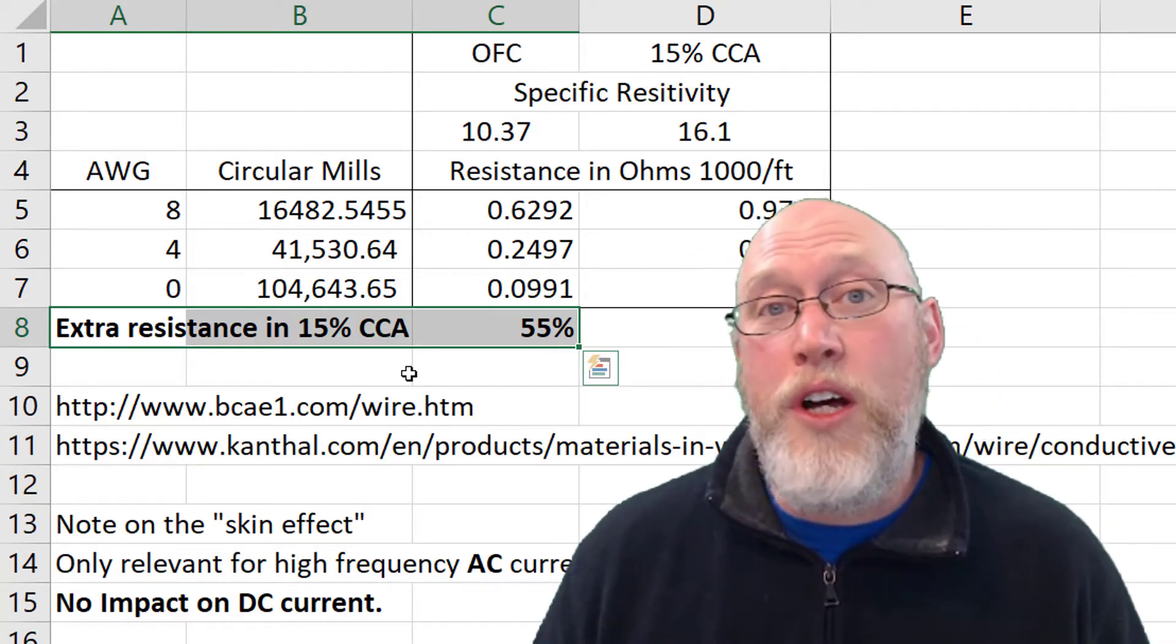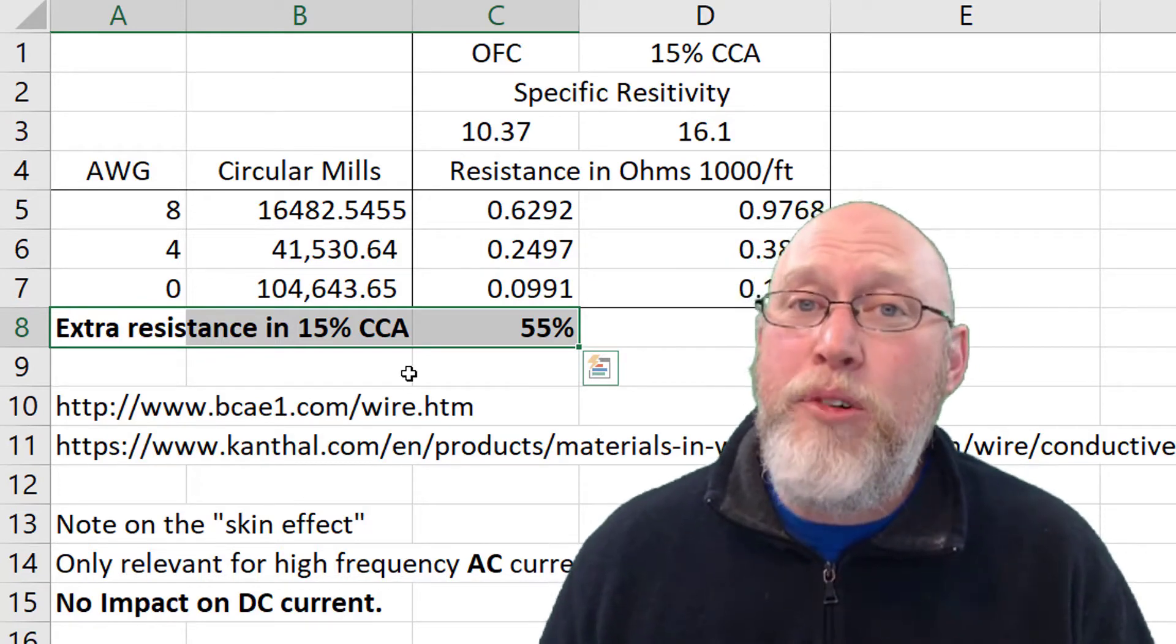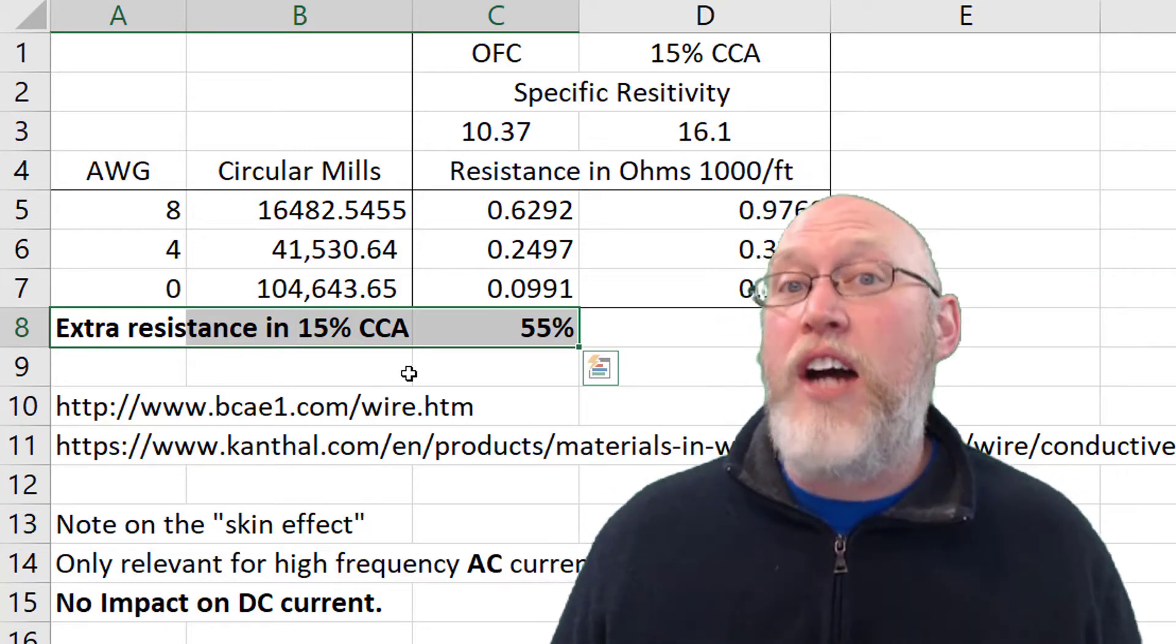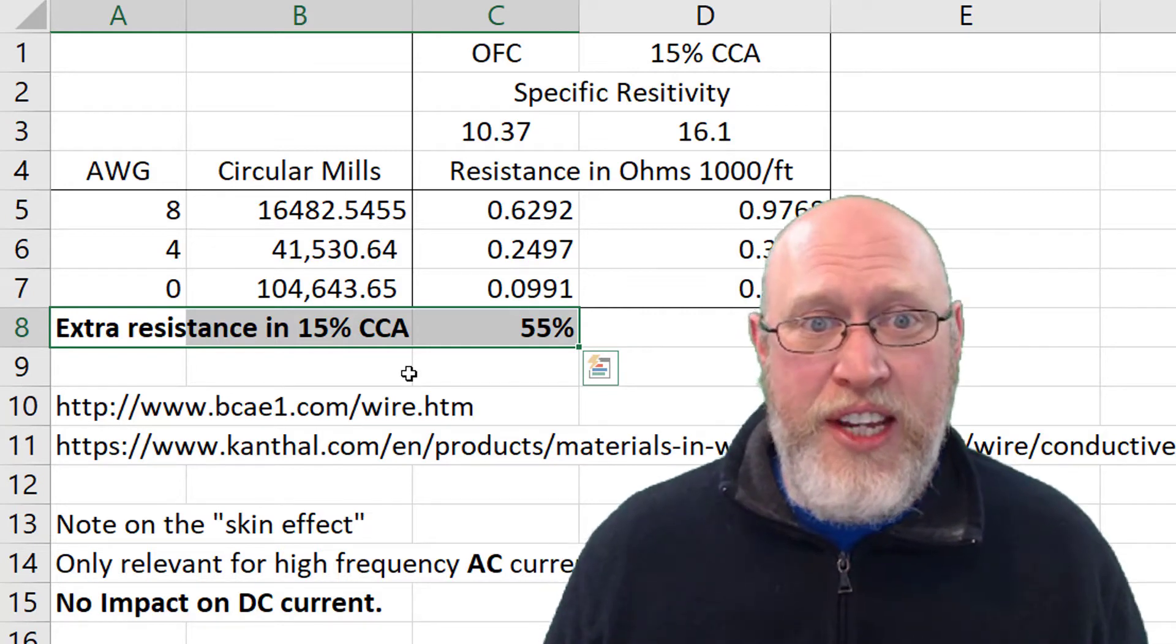The second thing that I want to point out to you is highlighted here in bold on the spreadsheet: this 15% CCA has 55% more internal resistance relative to the oxygen-free copper. So that tells you a whole lot. There's more resistance in the CCA.